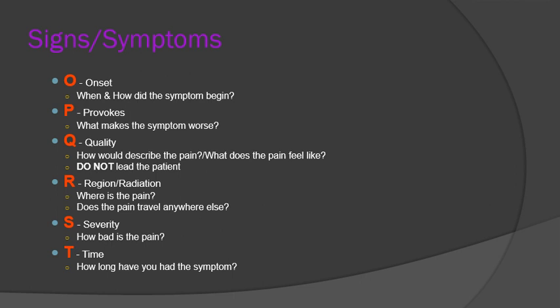T — time. We kind of talked about this with onset, when did the symptom begin. But this is a more specific question: how long have you had this symptom? How long has it been that you've had abdominal pain? How long has it been since your leg has been hurting? We need this information so we can ask more questions and get a more accurate depiction of the patient's condition.